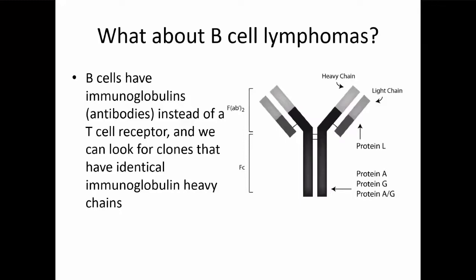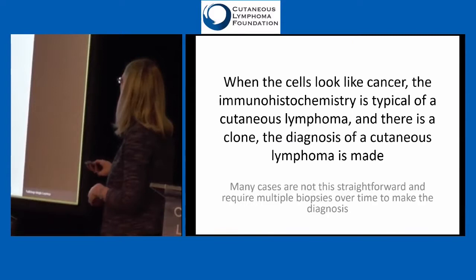If you happen to have a B cell lymphoma, we can do clonality studies too. But instead of looking at the T cell receptor, we're looking at the B cell receptor, which is a type of antibody. We look at different parts — the heavy chain, the big part, or the light chain, the littler part — to see if there are exact copies. Just like the T cell receptor is out looking for different things, the B cell receptor is too. Each B cell has different parts that help it recognize many different things.